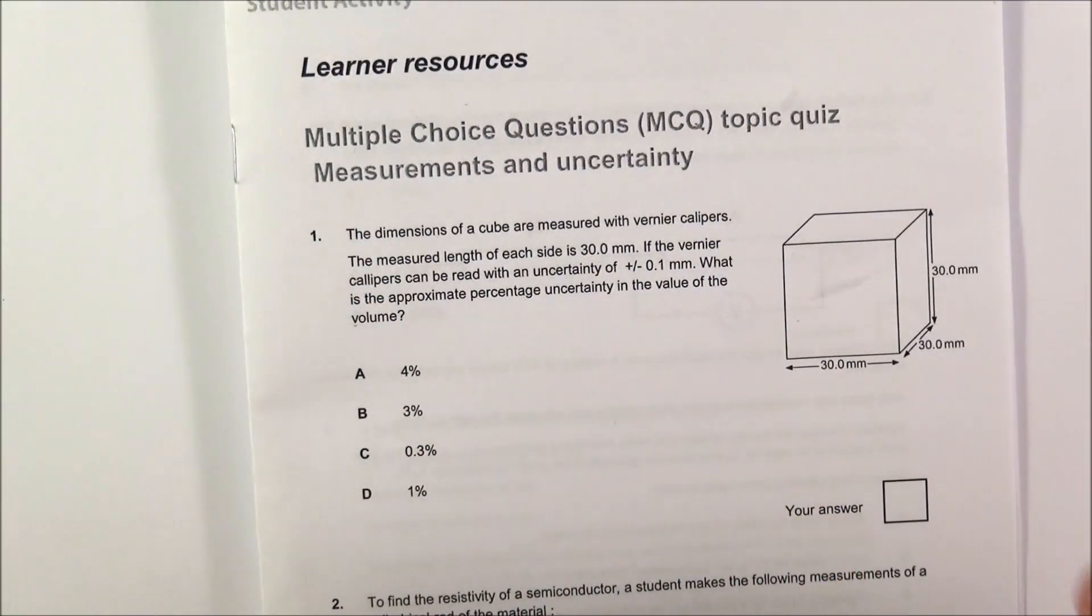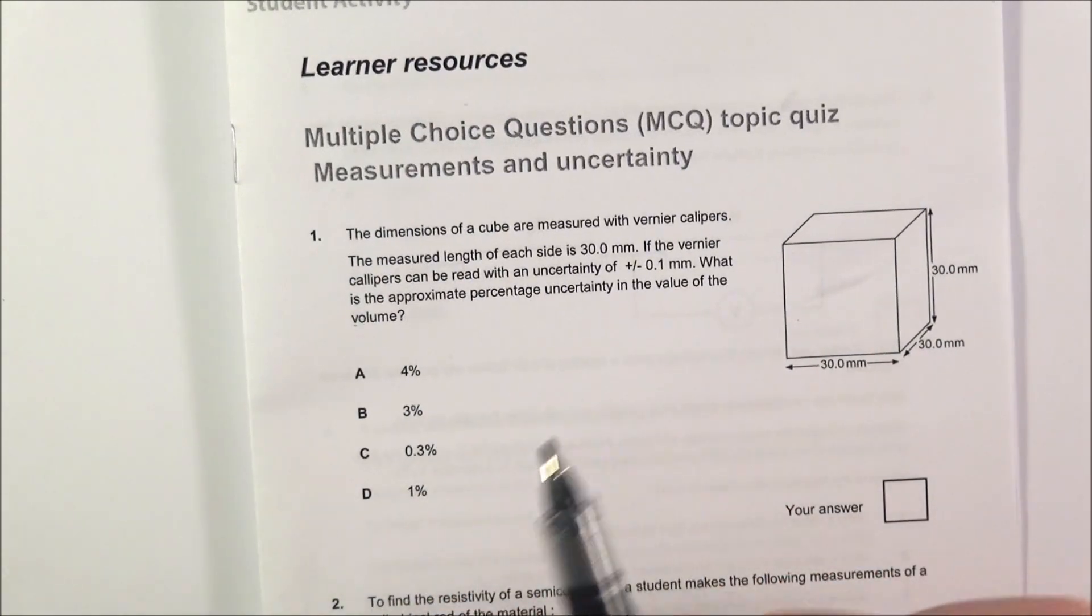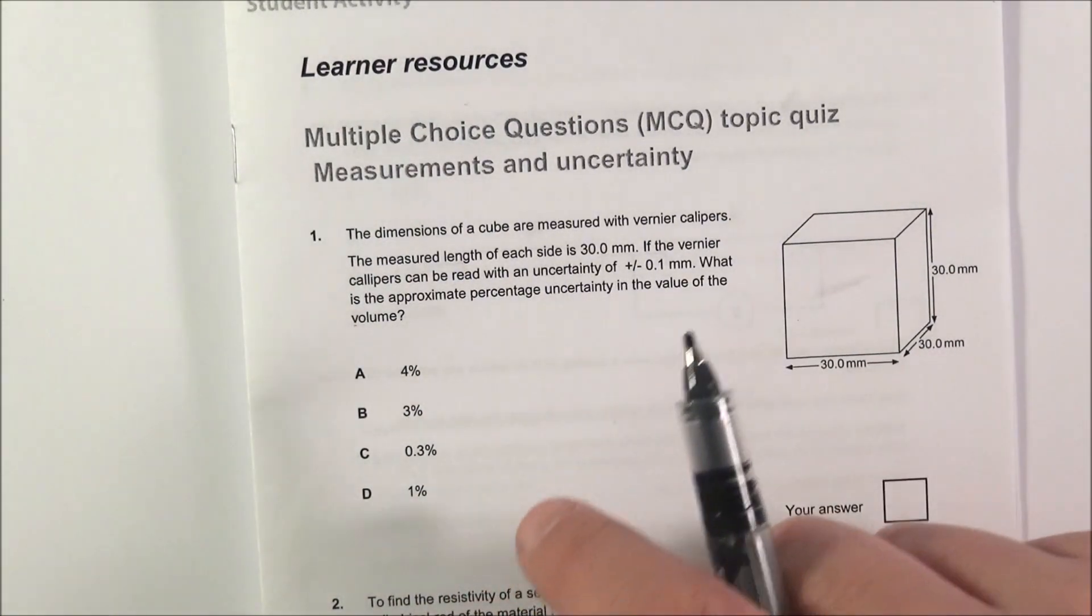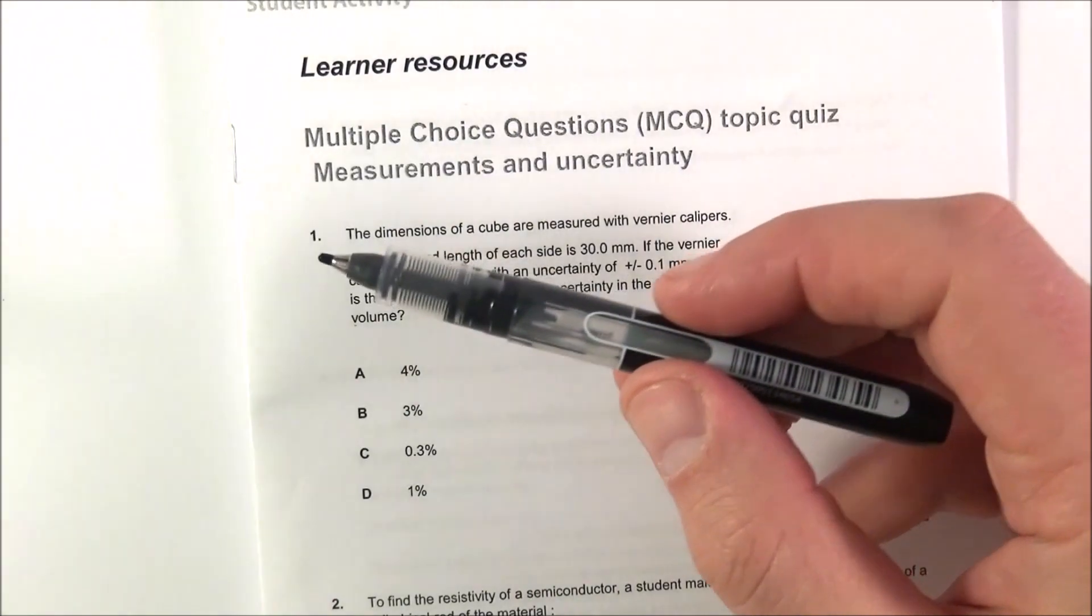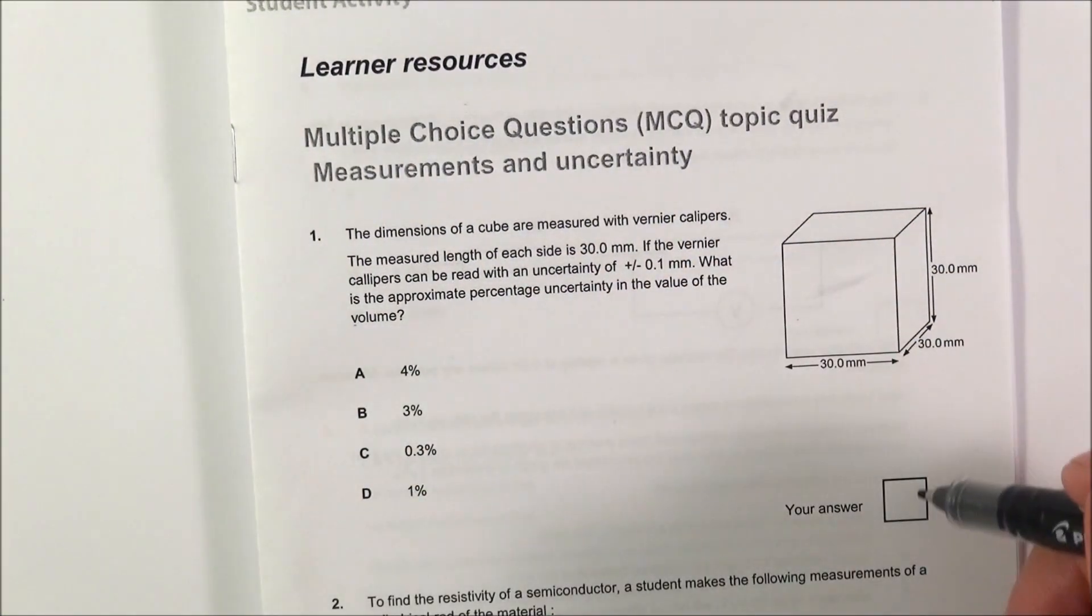The other thing is that sometimes people leave answers blank. This is an absolute no-no. If you don't know the answer, just have a guess. You can always come back to it later. With the OCR, you've got to choose A, B, C, or D and put the correct answer in the box over here.